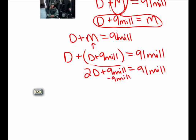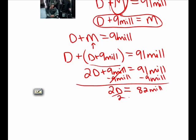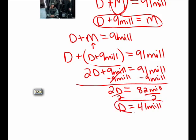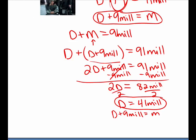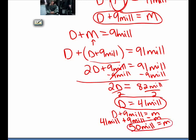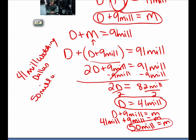So that's 2D plus 9 million equals 91 million. I subtract 9 million on both sides, giving 2D equals 82 million. Dividing both sides by 2, I get D equals 41 million — 41 million people were watching Dallas. Since M equals D plus 9 million, we replace D with 41 million: 41 million plus 9 million gives M equals 50 million. So 41 million were watching Dallas and 50 million were watching MASH.